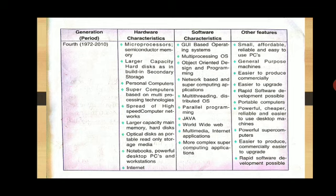The hardware of the fourth generation includes: microprocessors and semiconductor memory; larger capacity hard disks as built-in secondary storage for personal computers; supercomputers based on multiple multiprocessing technology; high-speed computer networks; and larger capacity main memory. Also included are optical discs as portable read-only storage media, notebooks, powerful desktop PCs, workstations, and the internet.